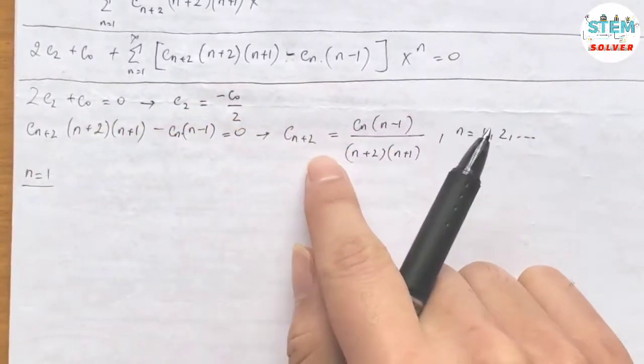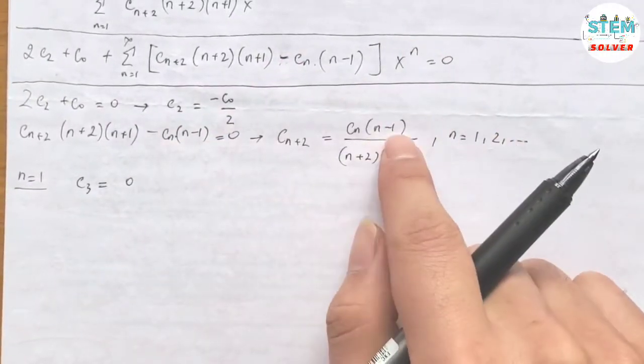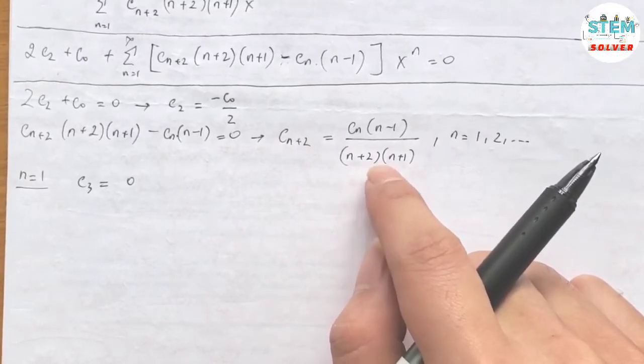When n equals 1, plug in 1, I have c3 equals 0. So 1 minus 1 is 0. And then on the bottom, we don't really need to care about.